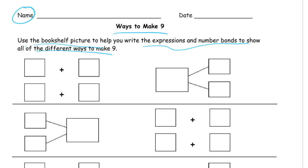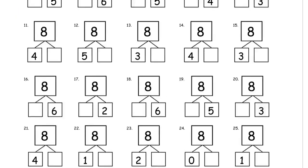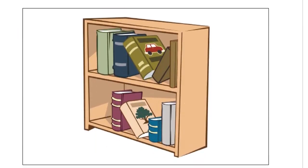I'm going to scroll over a few pages here just to show you the picture. There's the picture. You can count these. There's 1, 2, 3, 4, 5, 6, 7, 8, there's 9 books there. This picture is just to help you find different ways to make 9.